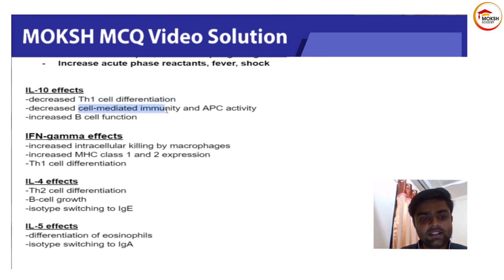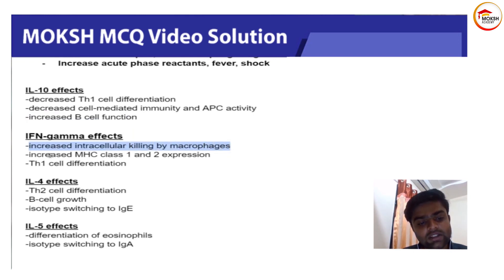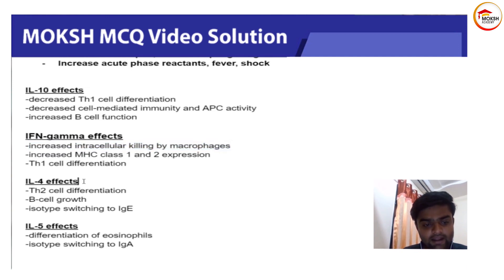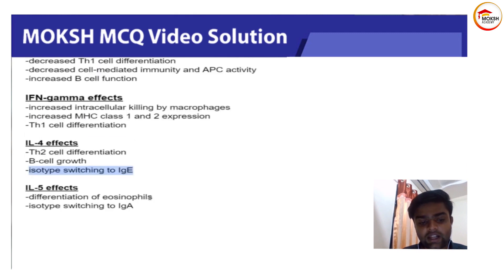IL-10 is an immunomodulator — it decreases Th1 cell differentiation, decreases cell-mediated immunity and antigen-presenting cell activity, and increases B cell function. Interferon-gamma increases the intracellular killing activity of macrophages, increases MHC class 1 and class 2 expression, and promotes Th1 differentiation. IL-4 effects include Th2 cell differentiation, B cell growth, and isotype switching to IgE, which is mostly seen in anaphylactic shock.